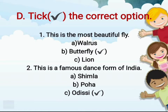The next question is: this is a famous dance form of India. The options are Shimla, Poha, and Udisi. Children, Shimla is a hill station. Poha is a food item. Whereas Udisi is a famous dance form of India. So the correct answer is Udisi.